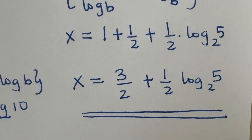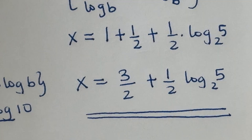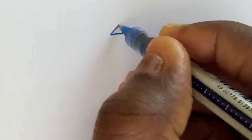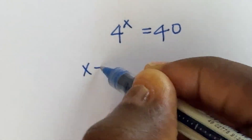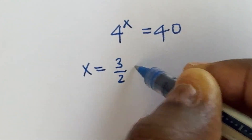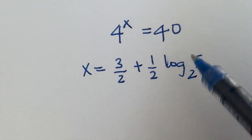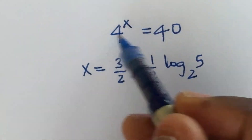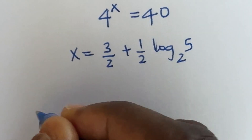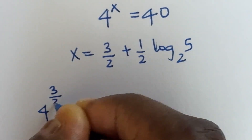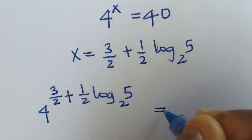And we can verify this result by checking if this value balances the equation. We were given 4 raised to power x is equal to 40, and the solution we arrived at says x is equal to 3 over 2 plus 1 over 2 log 5 base 2. So we put this value of x into the equation — the left hand side must equal the right hand side — giving us 4 raised to power 3 over 2 plus 1 over 2 log 5 base 2, and it should give us 40.